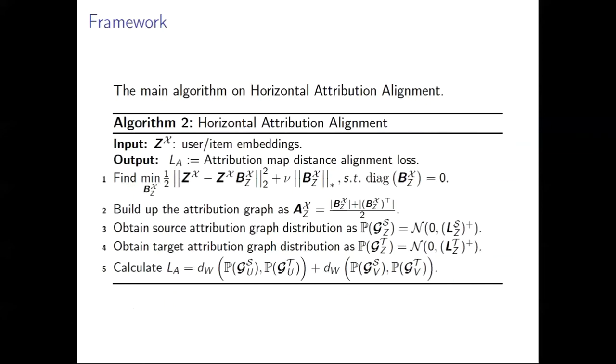We also provided the algorithm details of this method, horizontal attribution alignment. The first step is attribution space modeling with the bipartite linear methods to find out the attribution-attribution weight matrix BxA. Step two is building up the attribution graph, which makes them positive and symmetric. The third part is finding the source and target attribution graph distribution through inverse Laplacian matrix. And finally, we adopted Wasserstein distance to figure out the distance.